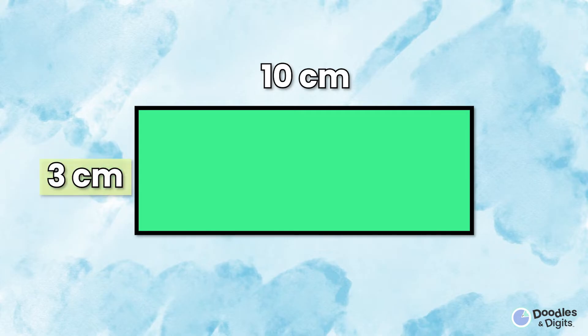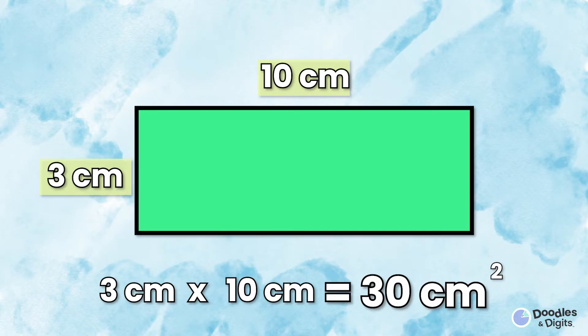So how do we find the area of a rectangle? Let's look at a problem and see if you can notice what's going on. 3 centimeters is the length and 10 centimeters is the width. What am I doing to these numbers?